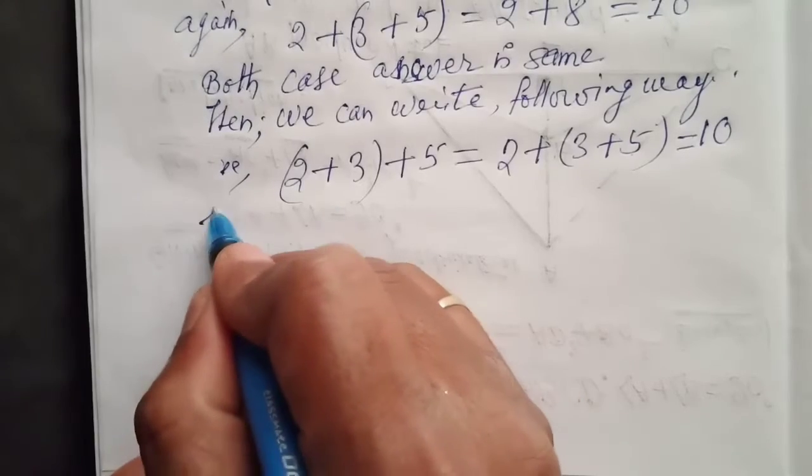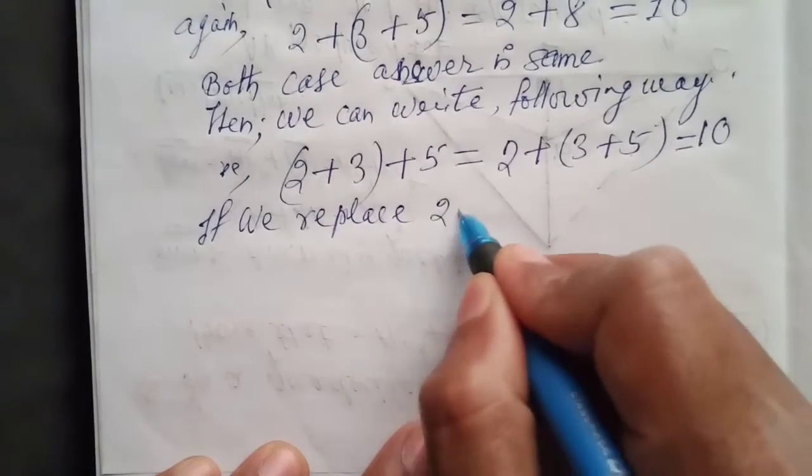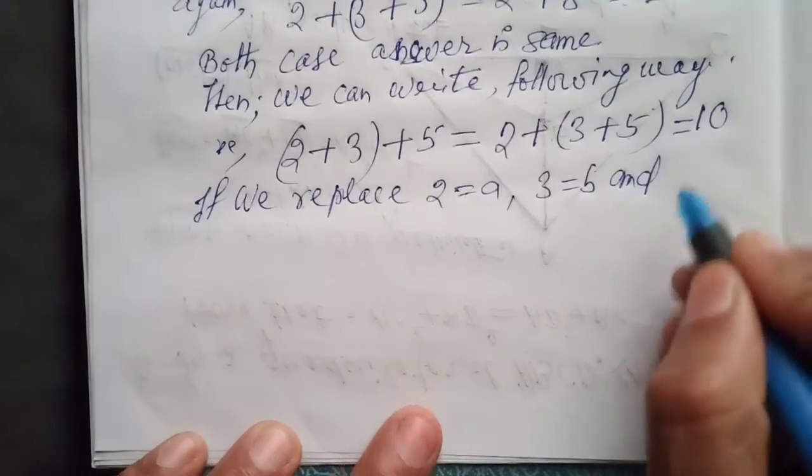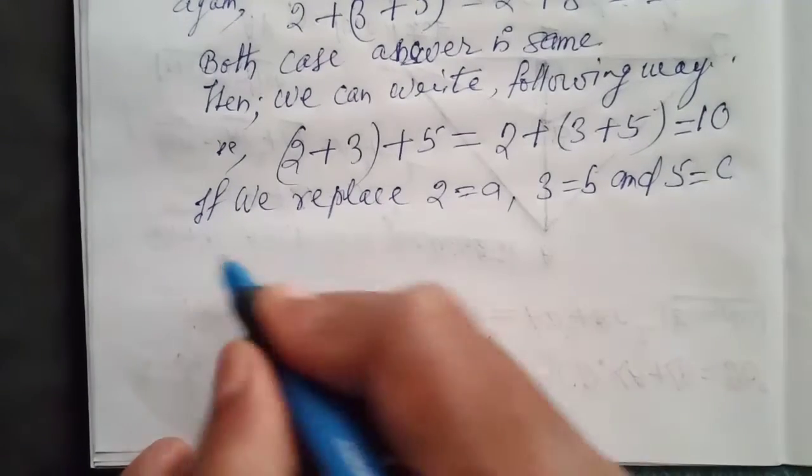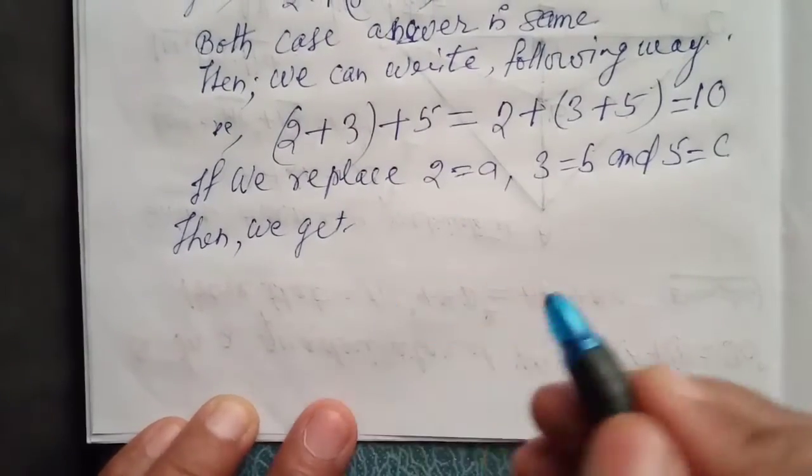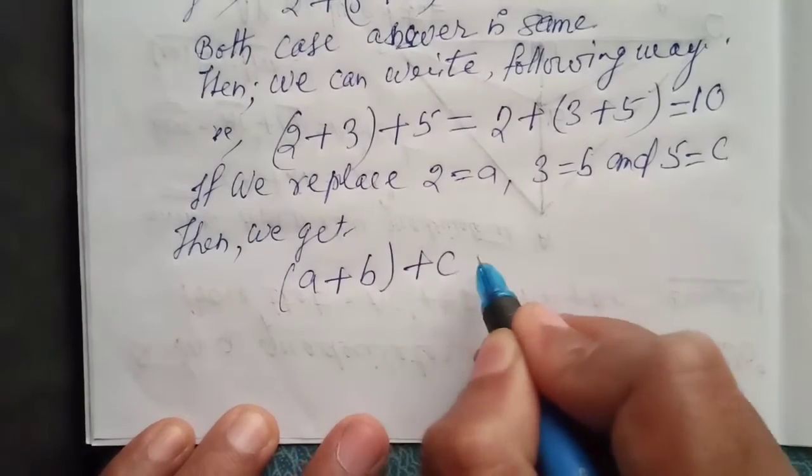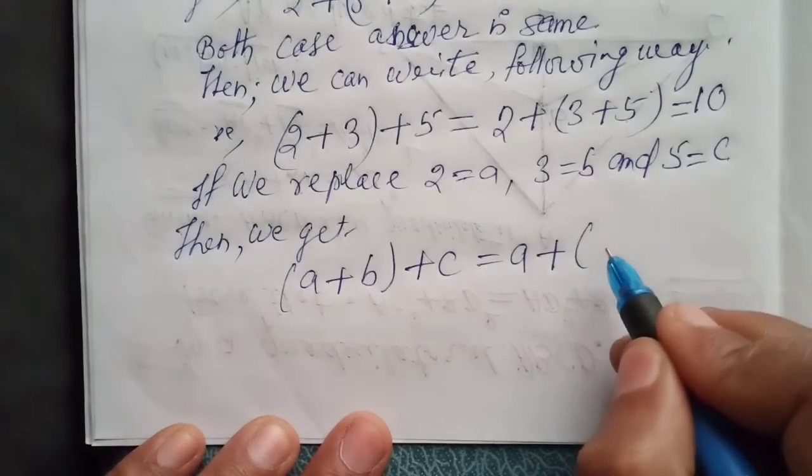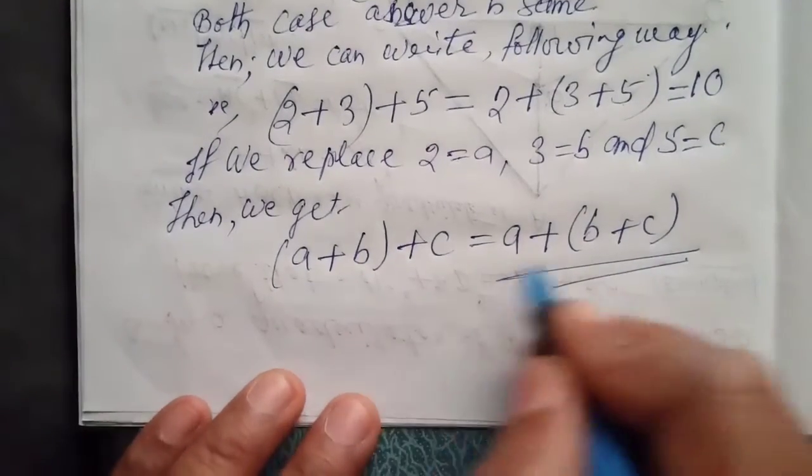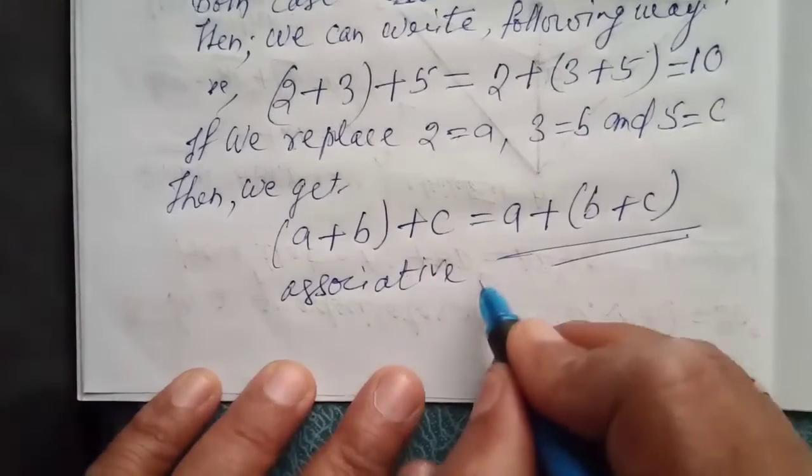If we replace 2 as a, 3 as b, and 5 as c, then we will get (a plus b) plus c equals a plus (b plus c). This form is known as the associative property of addition.